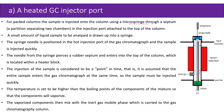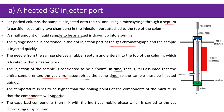For packed columns, using a heated GC injector port, the sample is injected onto the column using a microsyringe through a septum in the injection port attached to the top of the column. A small amount of liquid sample is drawn into the syringe, and the needle is positioned in the hot injection port and the sample is injected quickly. The needle pierces a rubber septum and enters the top of the column within a heater block. The entire sample is assumed to enter at the same time, so injection must be quick. The temperature is set higher than the boiling points of all components so they vaporize and mix with the inert carrier gas to be carried to the GC column for separation.